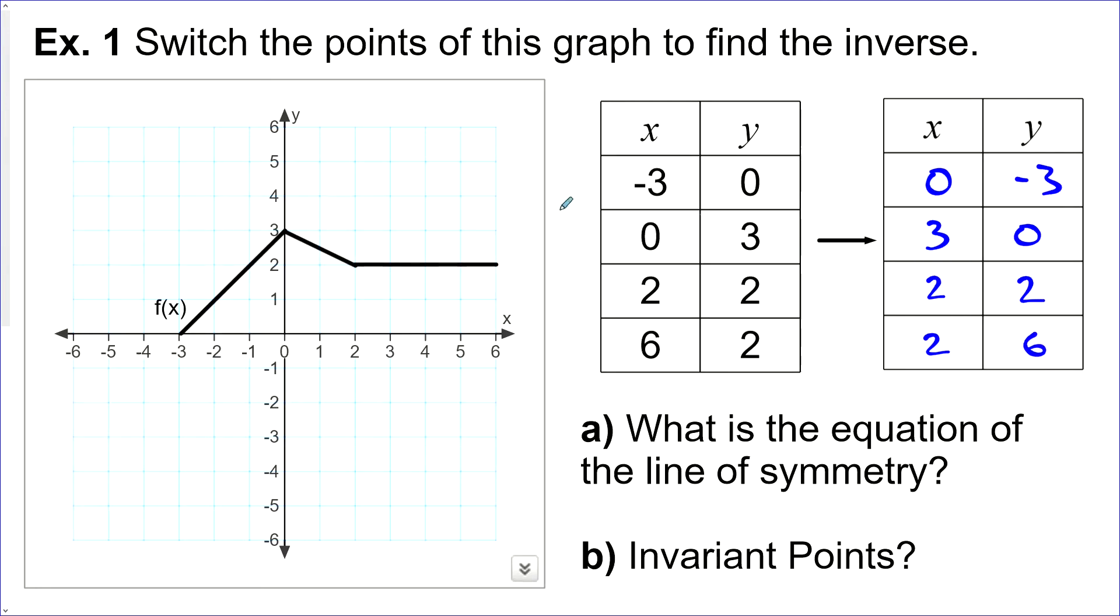Now, let's graph this and see what it looks like. So 0, negative 3, 3, 0, 2, 2, and 2, 6. So looks like this once we connect all the points.